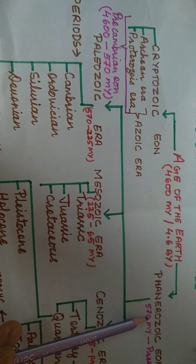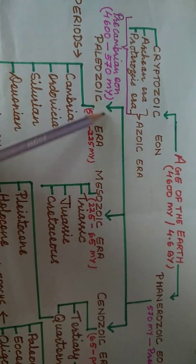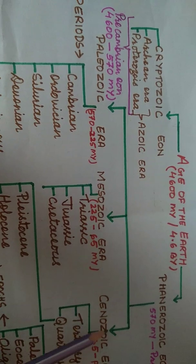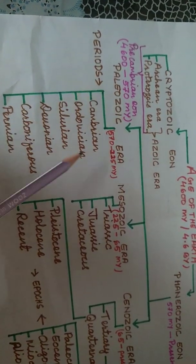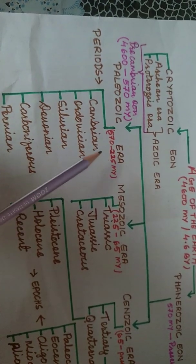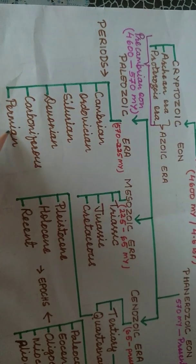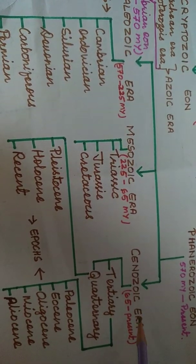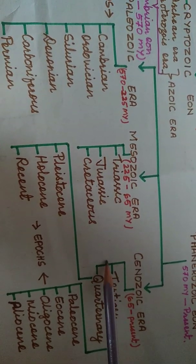Phanerozoic Eon is divided into three eras: Paleozoic Era, Mesozoic Era, and Cenozoic Era. These eras are further divided into periods. Under Paleozoic Era: Cambrian, Ordovician, Silurian, Devonian, Carboniferous, and Permian. Under Mesozoic Era: Triassic, Jurassic, and Cretaceous. Under Cenozoic Era: Tertiary and Quaternary.